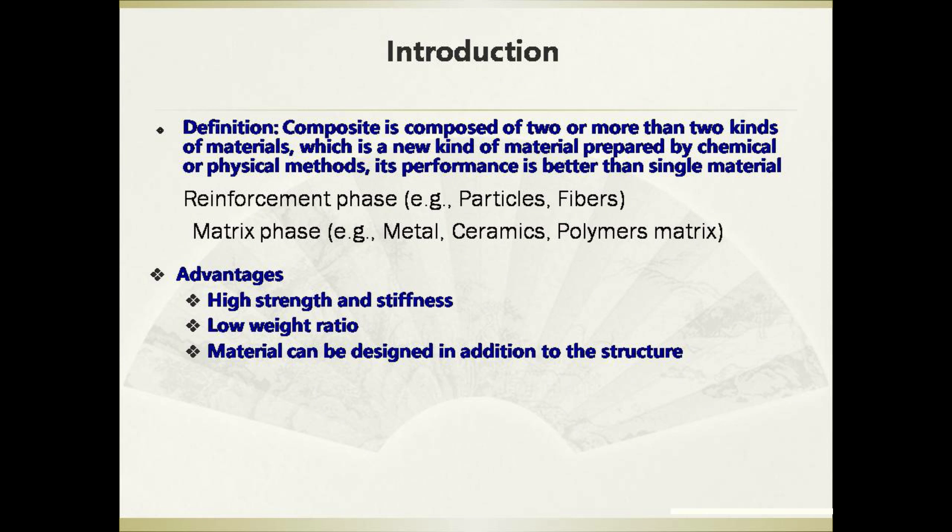So what is the composite? The composite is composed of two or more kinds of materials, which is a new kind of material prepared by chemical or physical methods. Its performance is better than a single material. The composite includes a reinforcement phase in the particle or fiber morphology, and the matrix phase — for example, metals, ceramics, and polymer matrices. The advantages of the composite are high strength and stiffness, low weight ratio, and the composite material can be designed in addition to the structure.